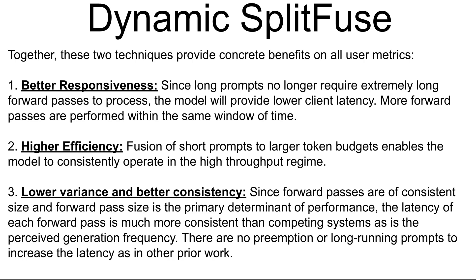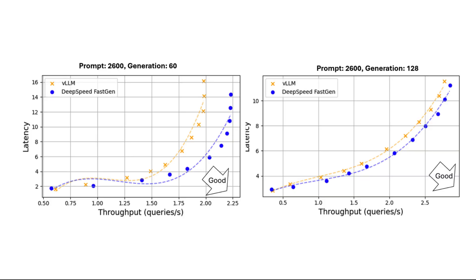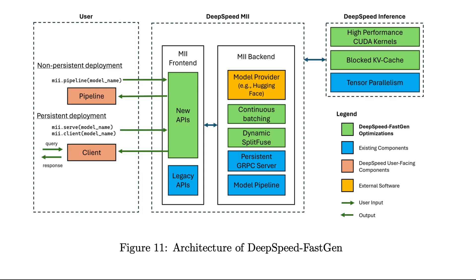Looking at throughput and latency of text generation using LLaMA 2 70 billion from their paper, they used tensor parallelism across four 80GB GPUs with a normal distribution applied to prompts. The results look quite good — compared to vLLM, DeepSpeed looks quite good. This is the architecture of DeepSpeed FastGen. It's worth knowing that DeepSpeed first became DeepSpeed FastGen — they work similarly in some parts but differently in others. For inference, we currently use DeepSpeed-MII.